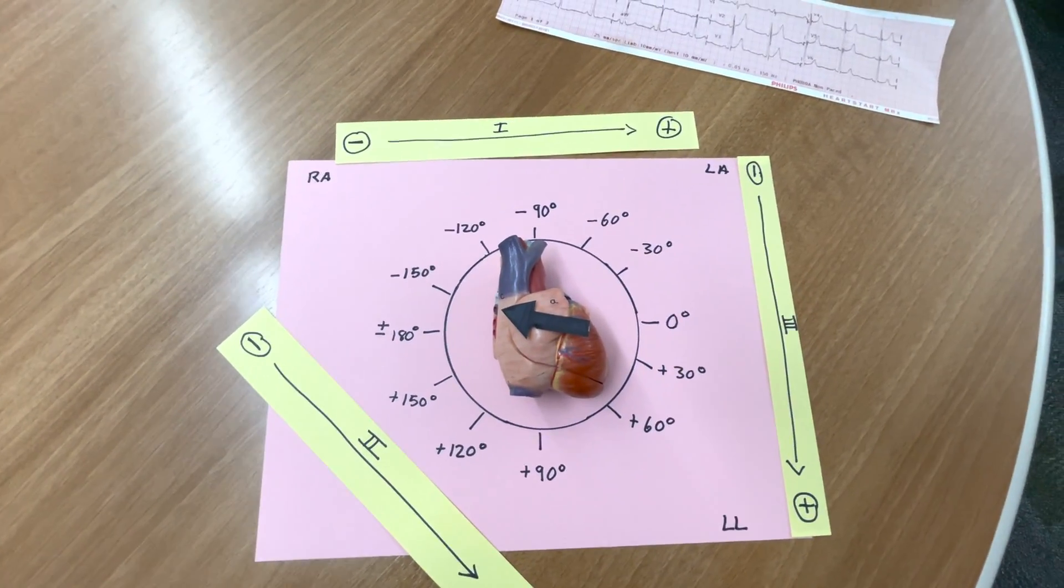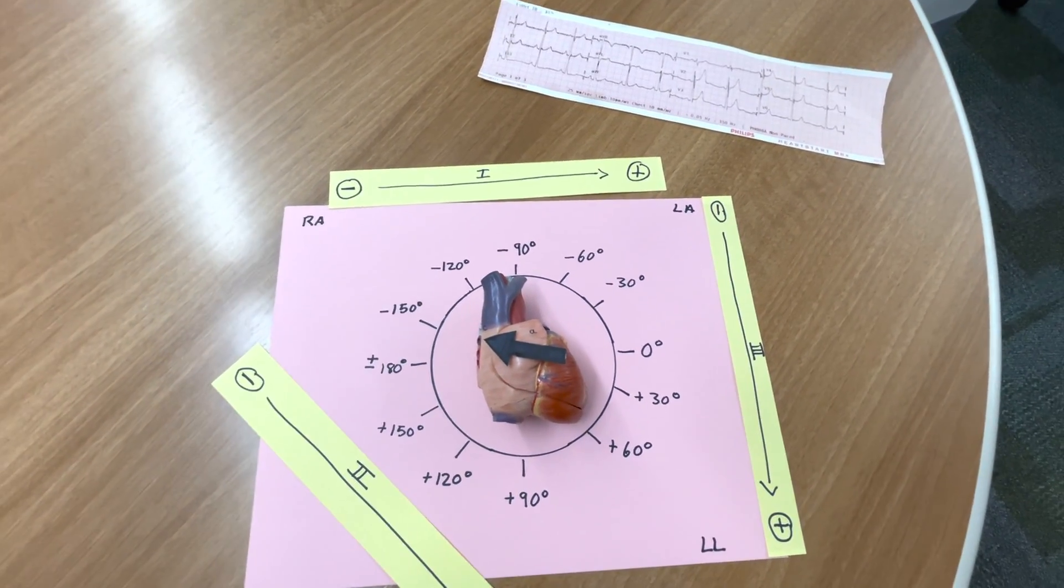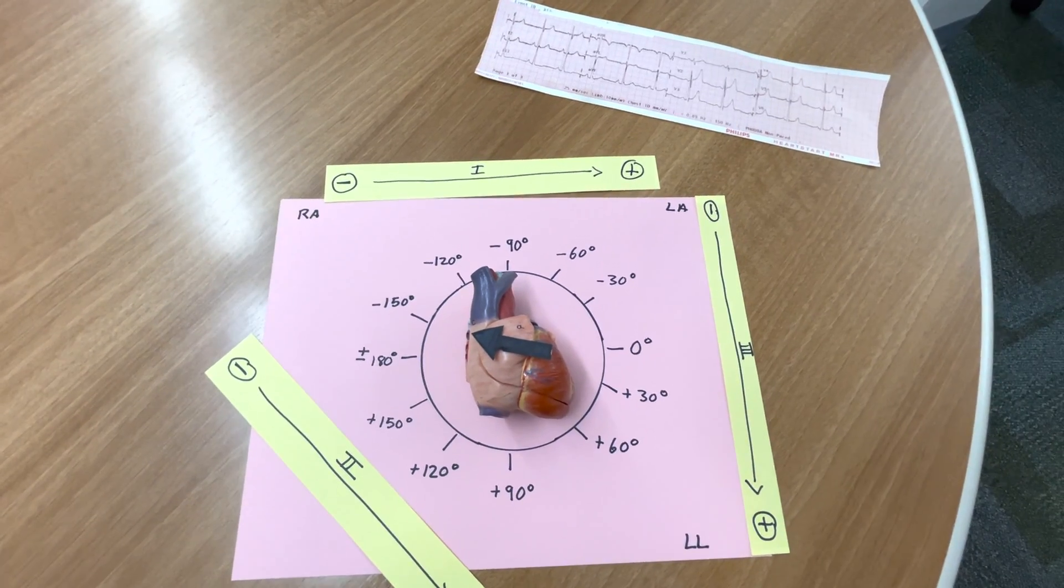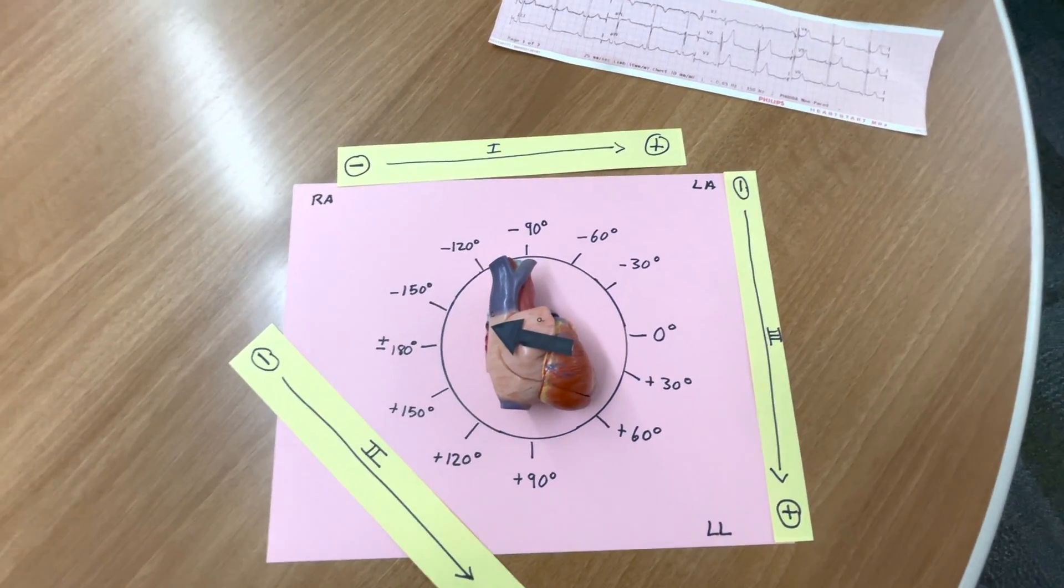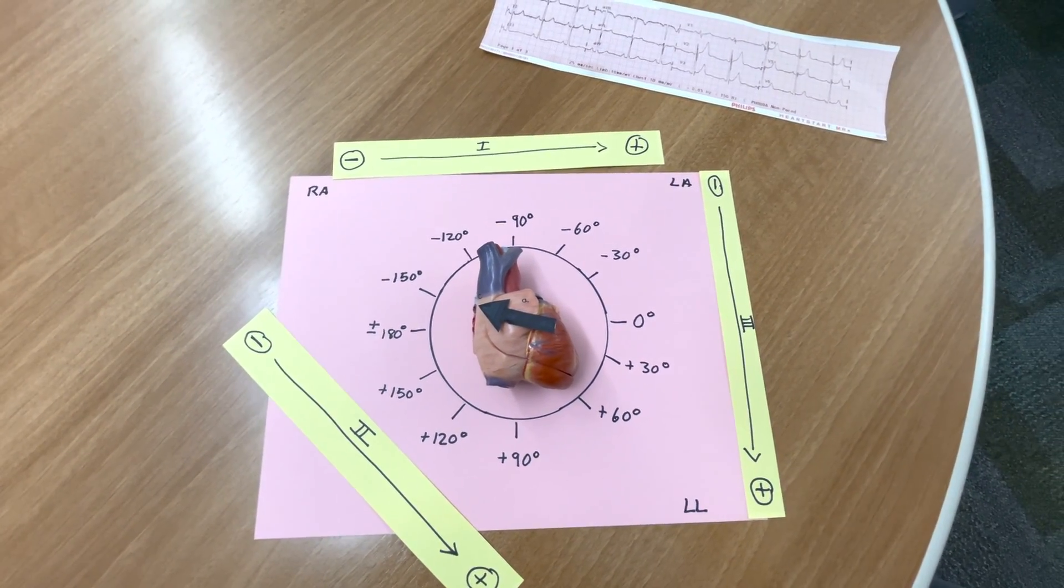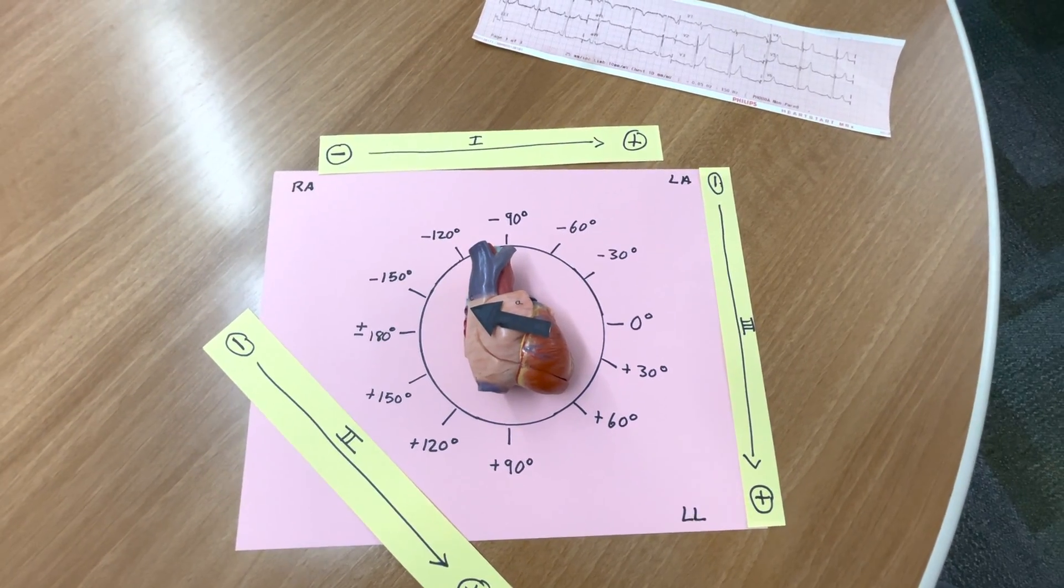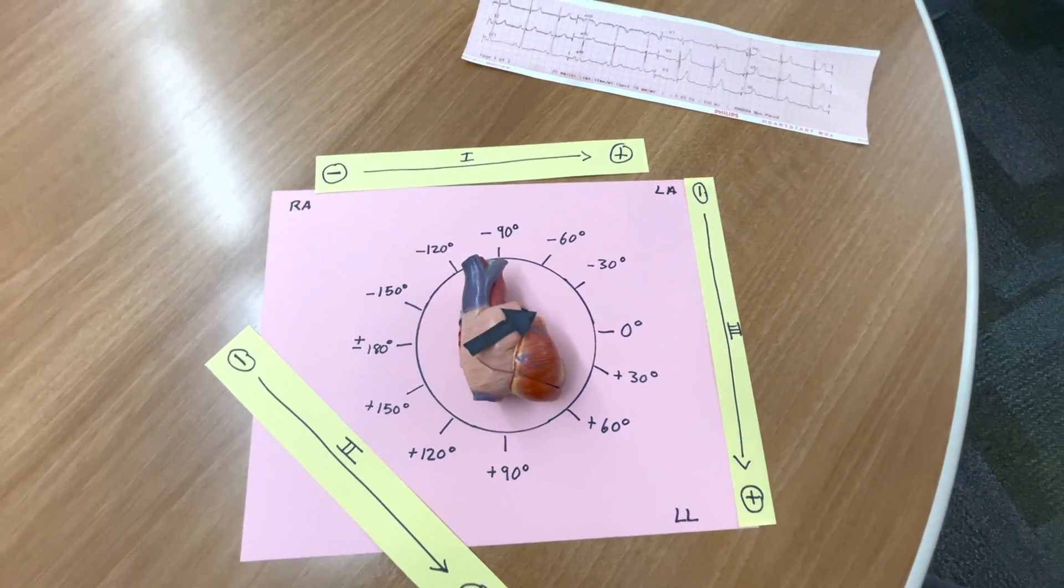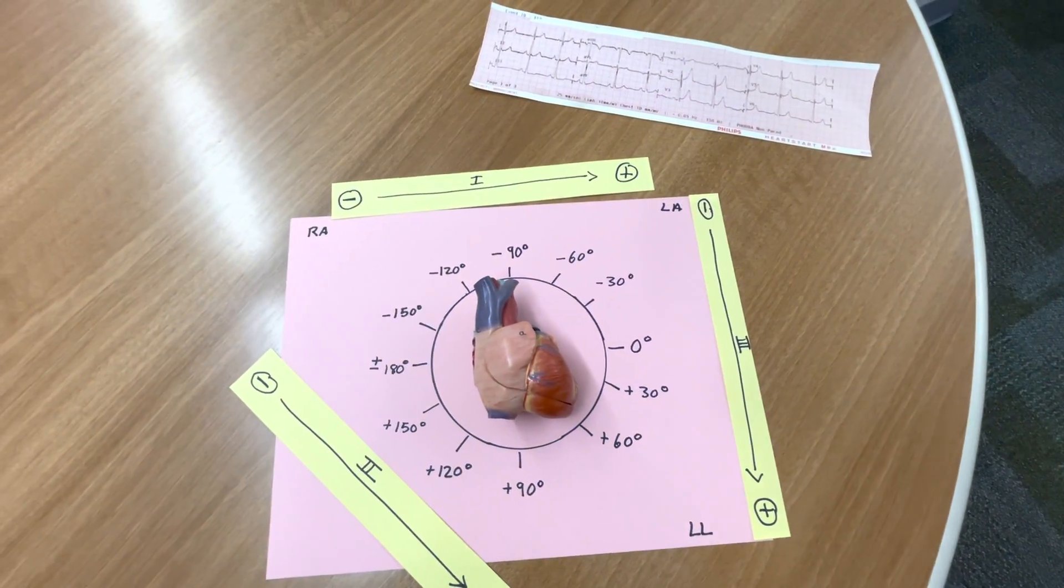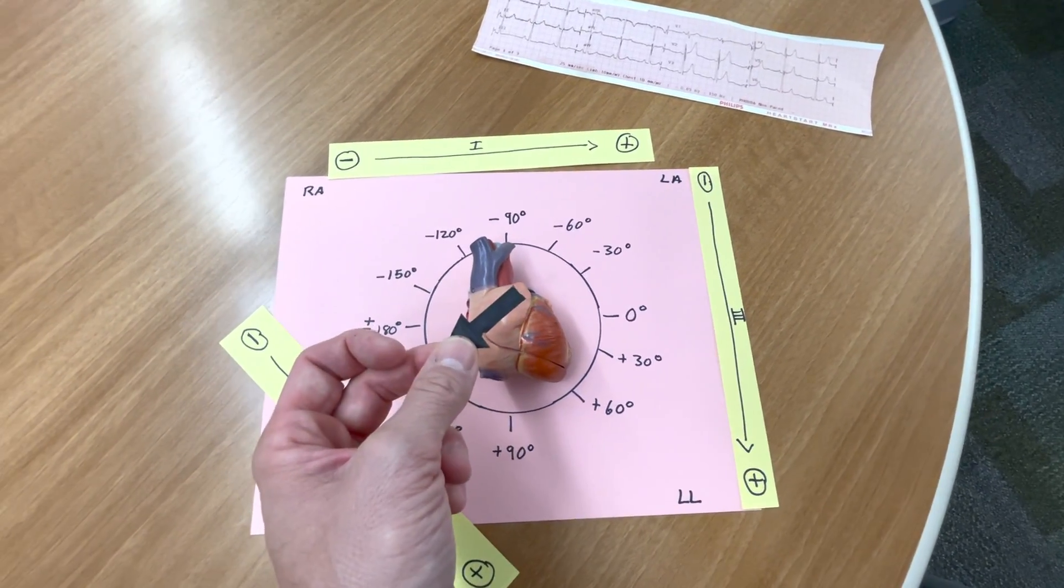What are some things that cause right axis deviation? Think of right bundle branch block, right ventricular hypertrophy as opposed to left ventricular hypertrophy, pulmonary disease. There's a certain type of right-sided heart failure called cor pulmonale that causes right chamber enlargement that can cause right axis deviation. Incredibly thin people can sometimes develop right axis deviation. And left posterior hemiblock can cause right axis deviation as well.